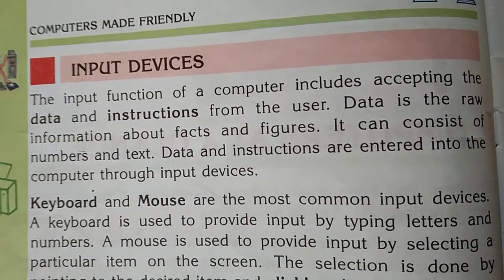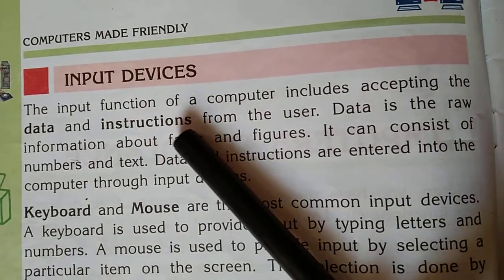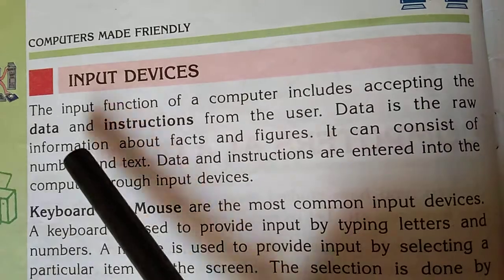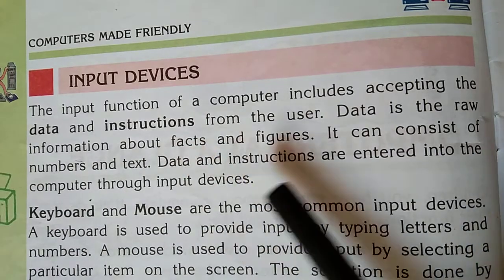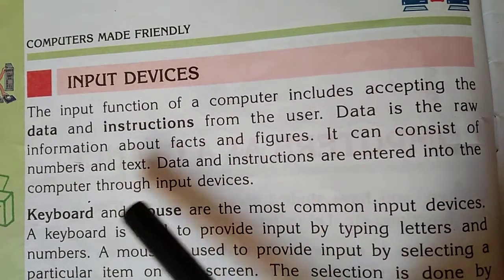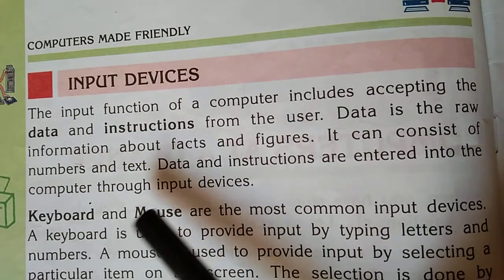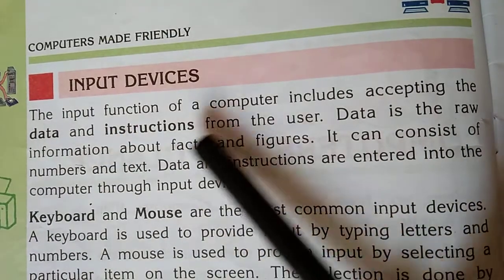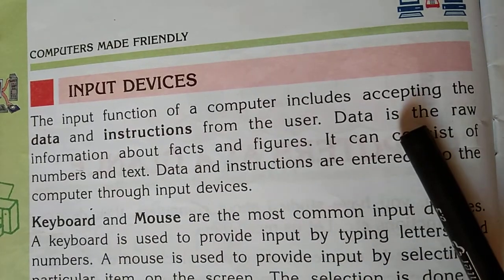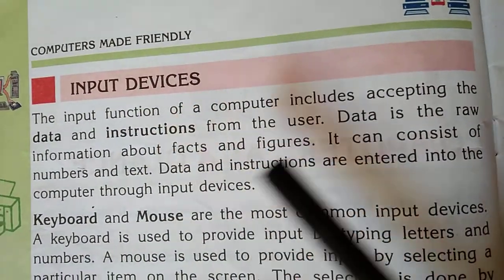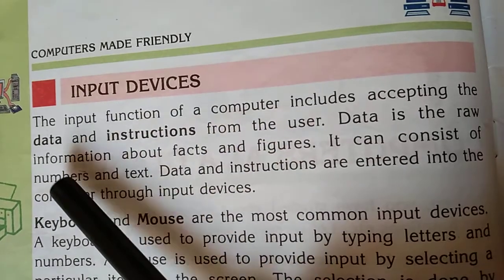Now we will learn in detail the three types of devices. Number one: input devices. The input function of a computer includes accepting the data and instructions from the user. We will give input as two things: data and instructions.